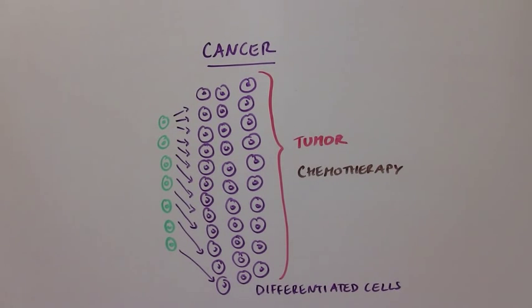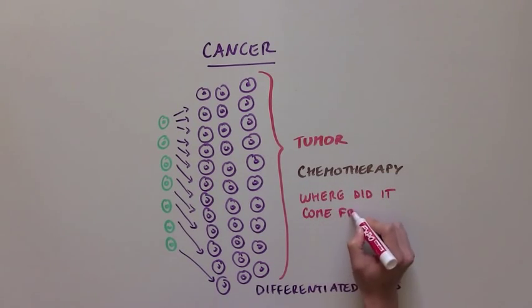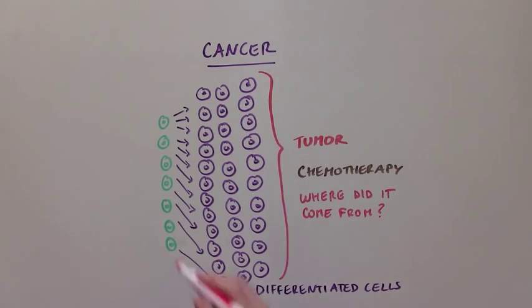However, to develop effective treatments, it is necessary for us to understand where the tumor mass came from. Where do these green dividing cells come from, and how did they get there?